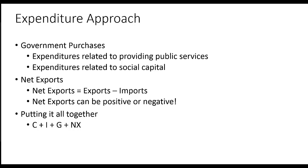Net exports represents spending on U.S. products by foreigners. Remember, GDP is a geographic measure — since goods are produced within the country's borders, it doesn't matter who buys them. However, Americans spend a significant amount on imports, which are produced abroad. That spending should show up in other countries' GDP, not ours. So we subtract the value of imports from U.S. spending to avoid overstating total U.S. production. Net exports is simply exports minus imports. If imports are greater than exports, net exports will be a negative number.